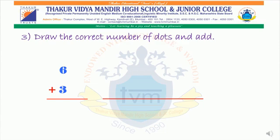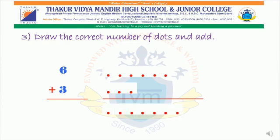Let us draw the correct number of dots and add. The first number is six, so we have to draw six dots. The next number is three, so we have to draw three dots. Let us count all the dots together, and the answer is nine dots.